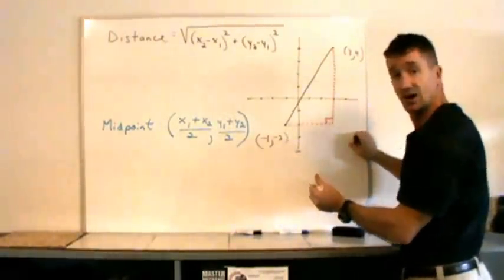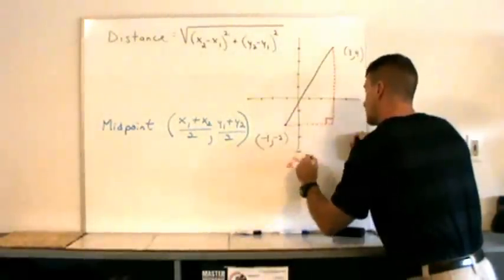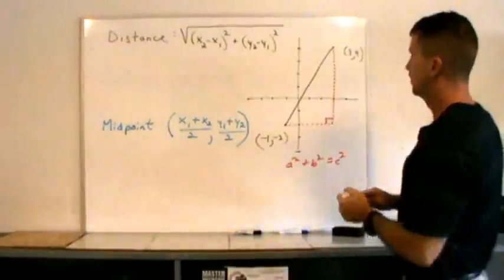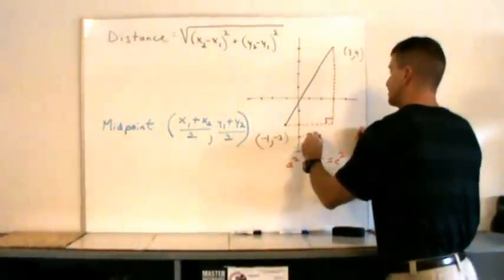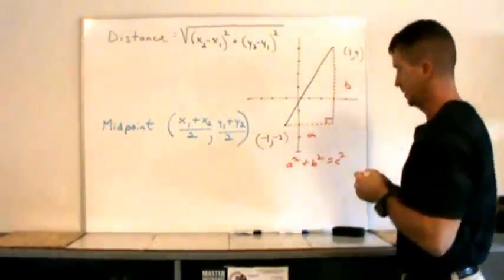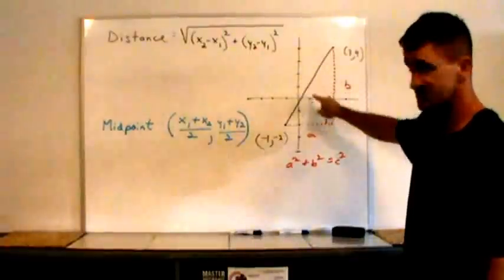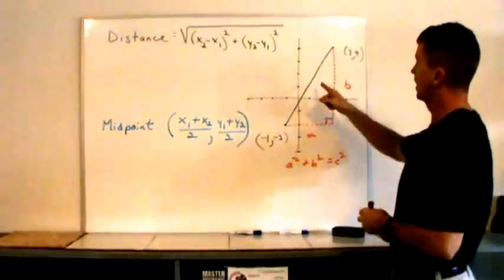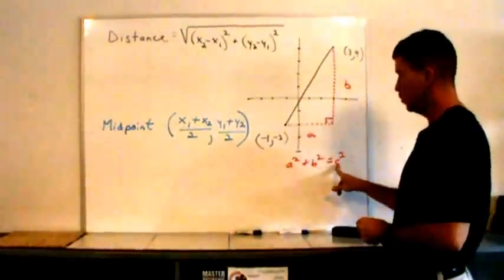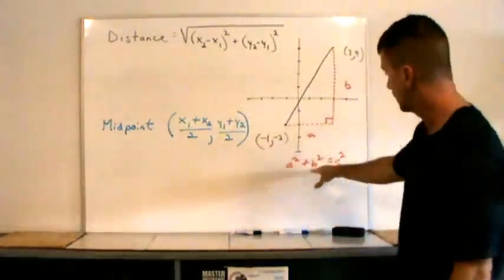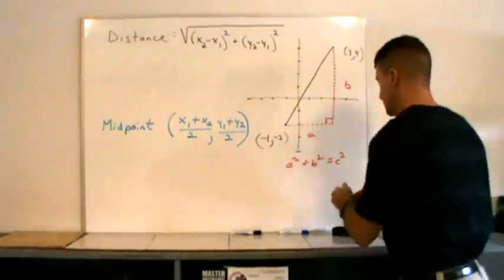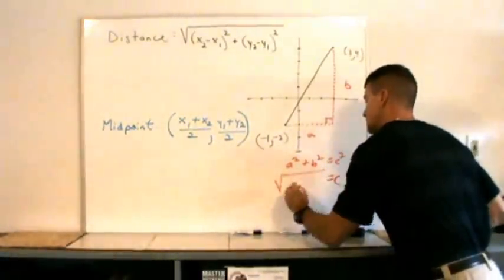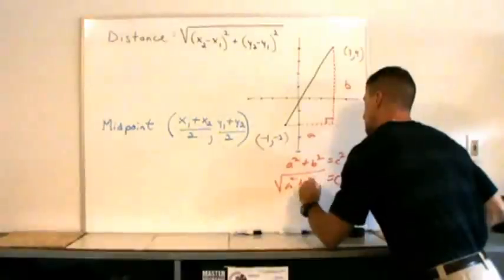The Pythagorean Theorem deals with right triangles: A squared plus B squared equals C squared. So if we call this side A and this side B, we must call the hypotenuse C, opposite the 90 degrees. The distance between these two points, which is C, is reflected in that equation. But we want C, the distance, not C squared. So we take the square root of A squared plus B squared.